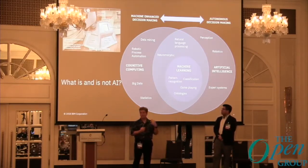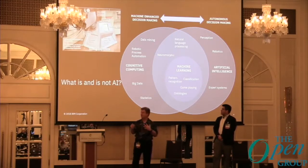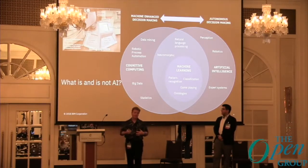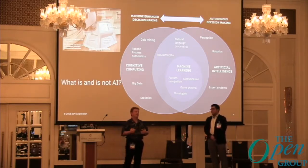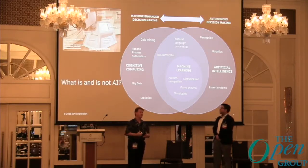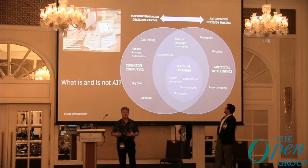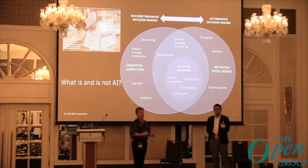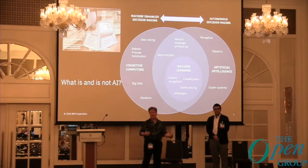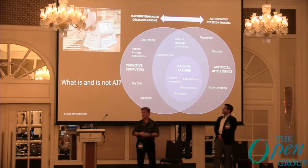The diagram shows the difference between cognitive computing, machine learning, and AI. AI is a convergence set of technologies. Cognitive computing is essentially prescriptive analytics. Machine learning provides the algorithms — like neural nets — that actually allow you to identify patterns and visualizations.